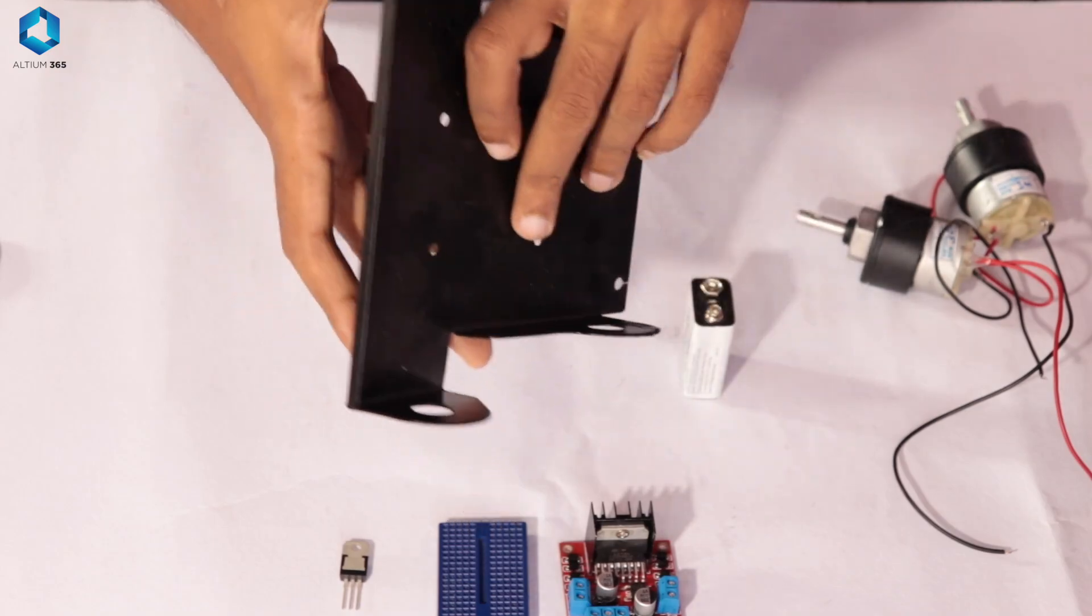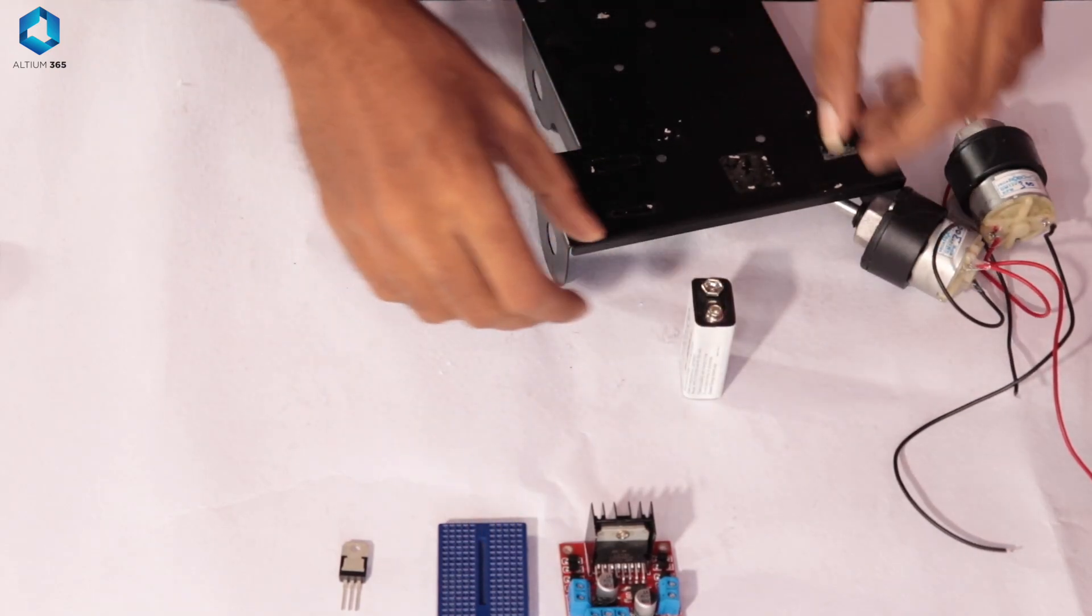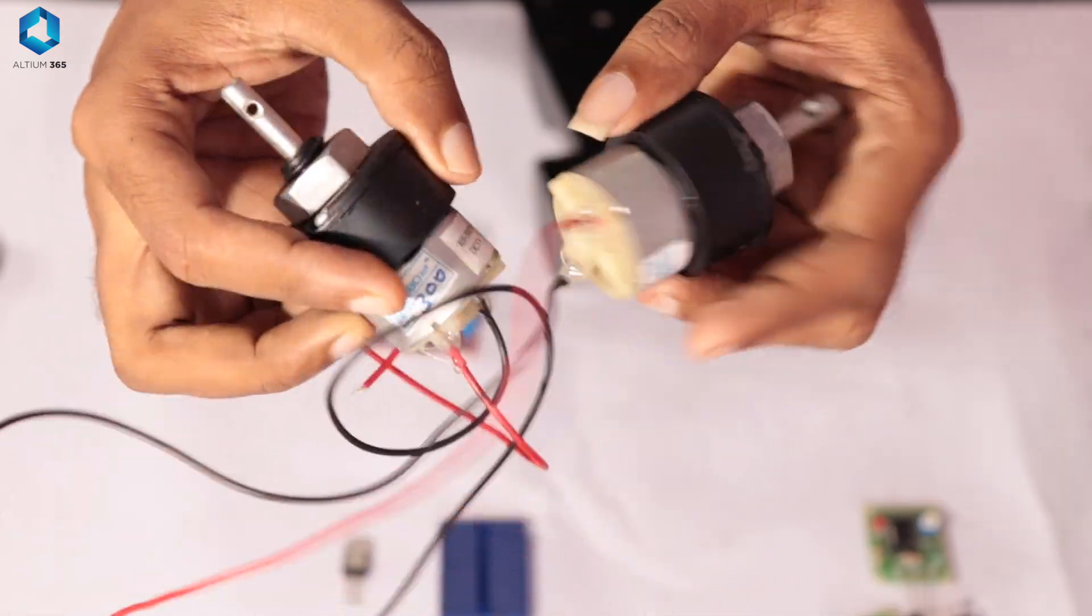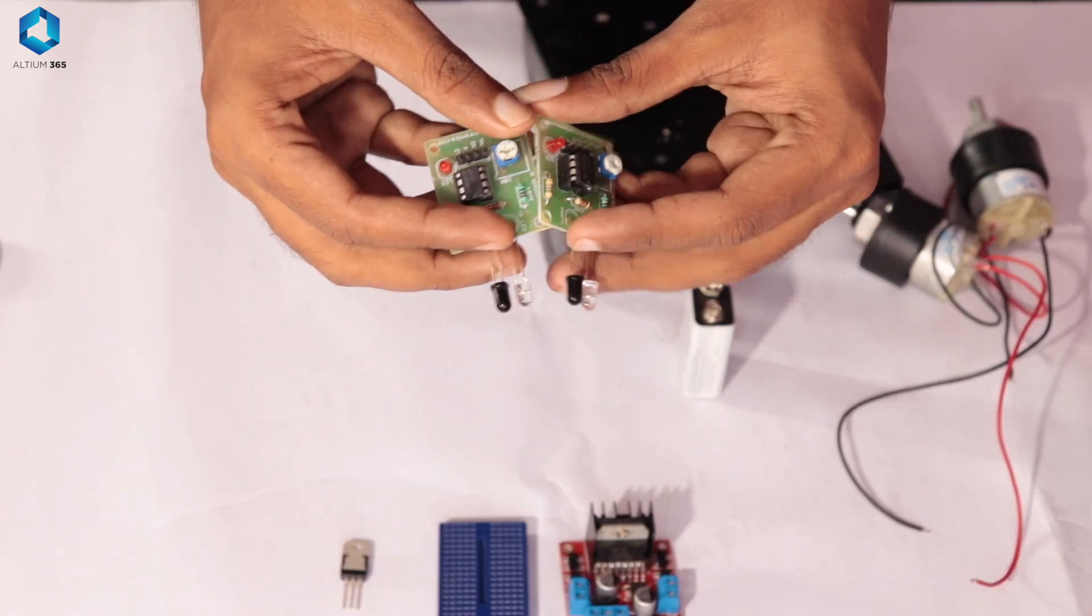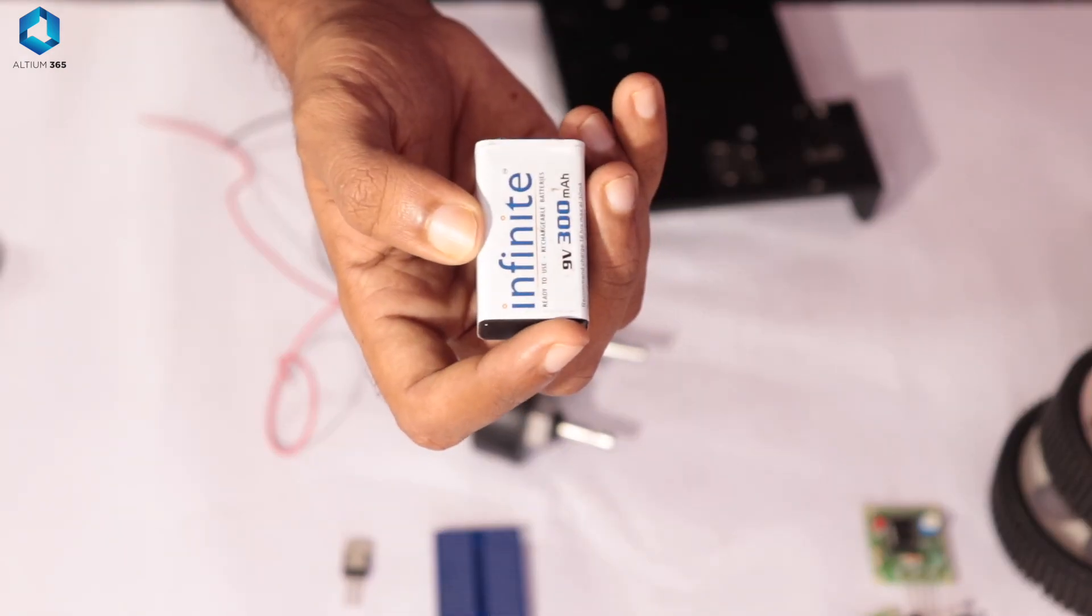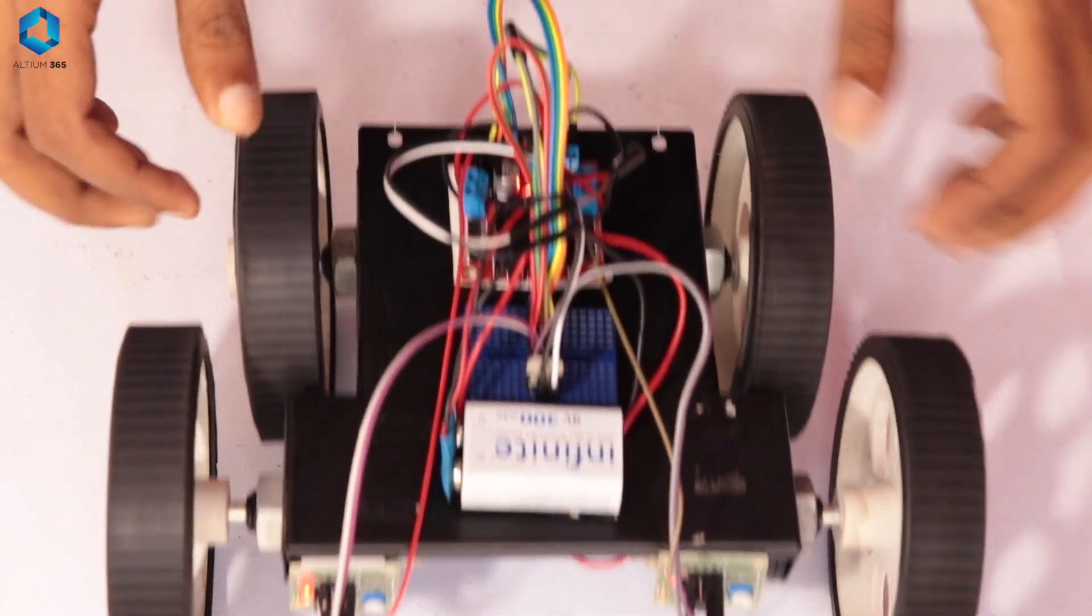So basically I started combining everything I learned in the previous steps: motors that will help the robot to move, sensors that will help the robot to sense its environment, and a power source that will power up the whole robot.